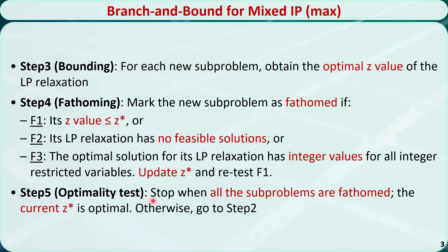Step 5 is called the optimality test. We need to stop the algorithm when all the subproblems are fathomed. The current z* is optimal. Otherwise, go to step 2 and repeat the process.